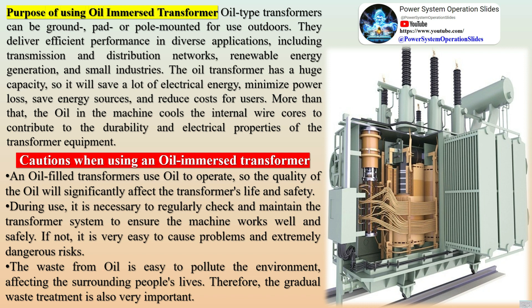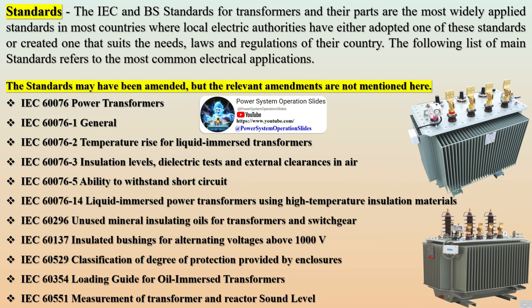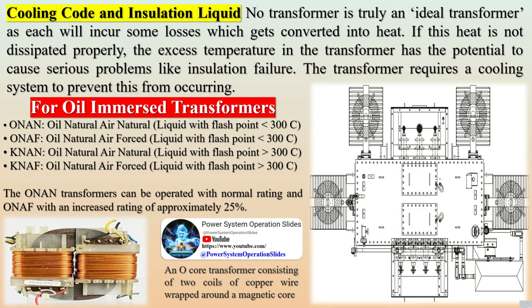An oil-filled transformer is structurally similar to a standard transformer and is classified according to the form of core insulation. It has the identifiable feature of oil-immersed coils to lower the heat of the devices within it. The basic elements consist of the magnetic core, windings, and bushings. The magnetic core provides a path for magnetic flow. Windings create a magnetic field and consist of a conductor coil wrapped around the core and insulated with pressboard barriers and screens. The thickness of the winding insulation increases with voltage.